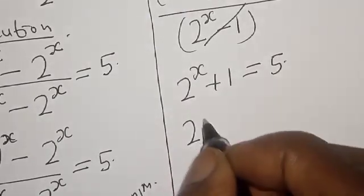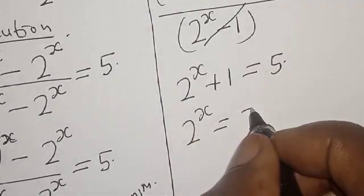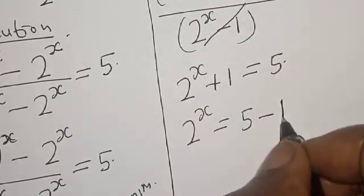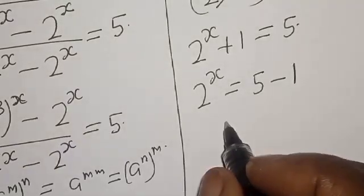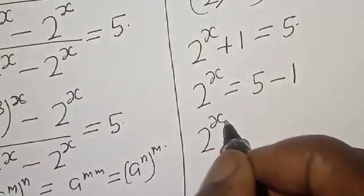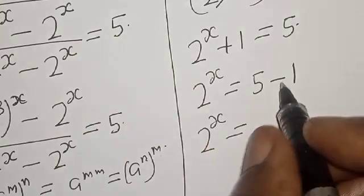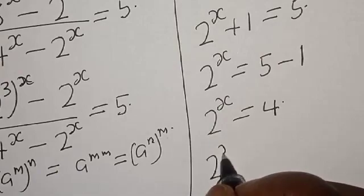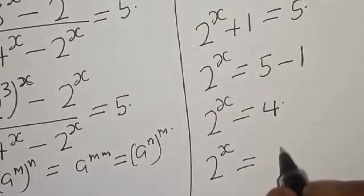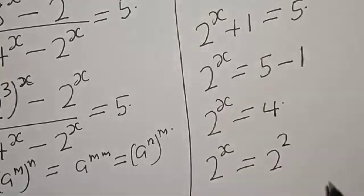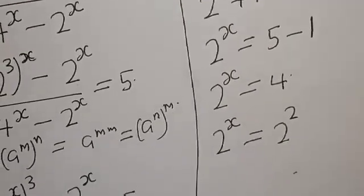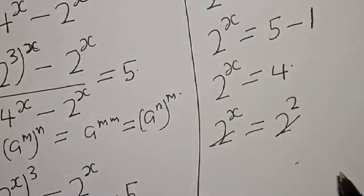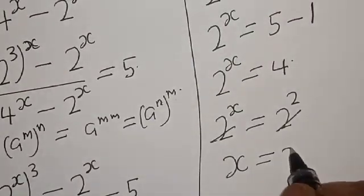We are left with 2 raised to the power x plus 1 is equal to 5. Then 2 raised to the power x is equal to 5. Moving the plus 1 across gives minus 1, so 2 raised to the power x is equal to 5 minus 1, that is 4. Then 2 raised to the power x equals 4, which is the same as 2 squared or 2 raised to the power 2. We have the same base, so x is equal to 2. This is our final answer.